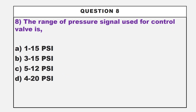We are moving to our next question. The range of pressure signal used for a control valve is dash. Option A: 1 to 15 psi. Option B: 3 to 15 psi. Option C: 5 to 12 psi. Option D: 4 to 20 psi.